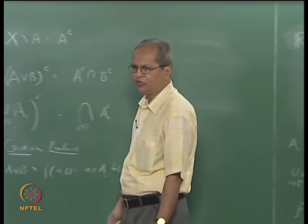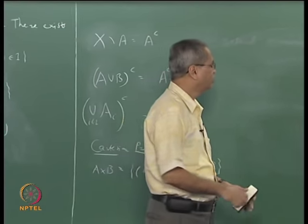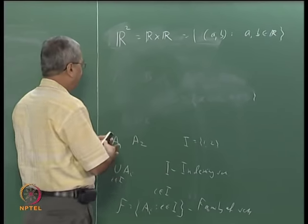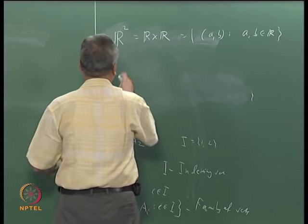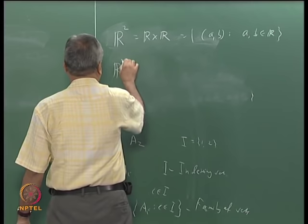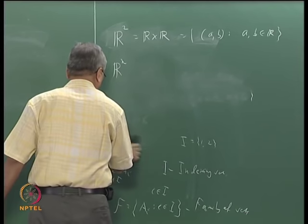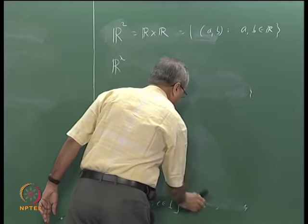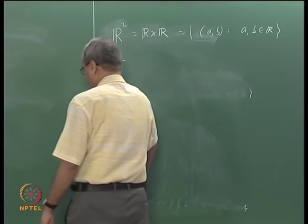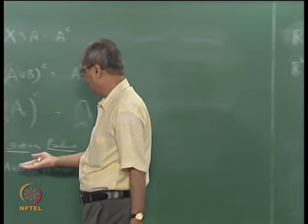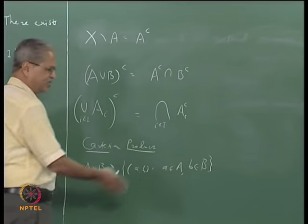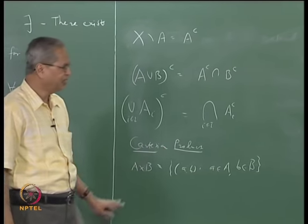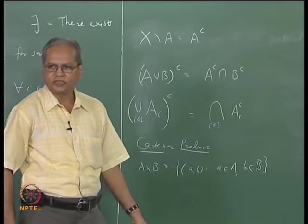Similarly, one can define ℝ³, ℝ⁴, and in general ℝⁿ as the Cartesian product of ℝ taken n times. One can also define A₁×A₂×...×Aₙ for n sets. The real problem occurs when we want to define the Cartesian product of an arbitrary infinite family of sets.